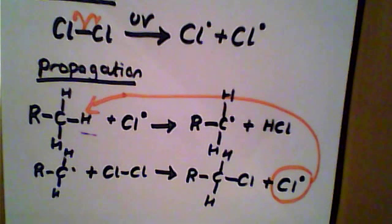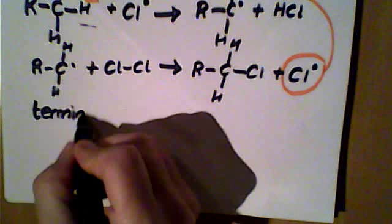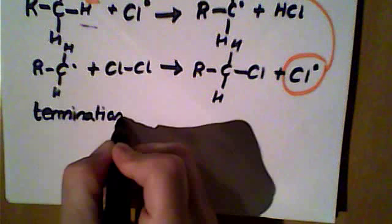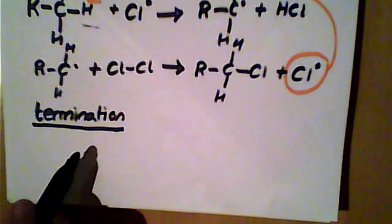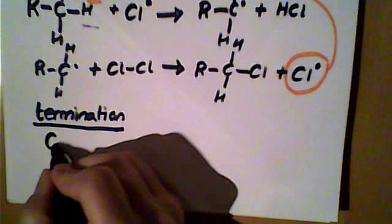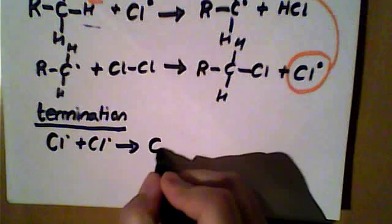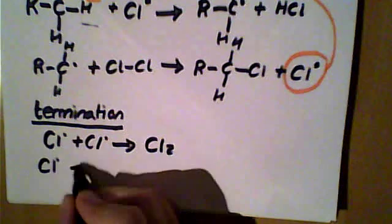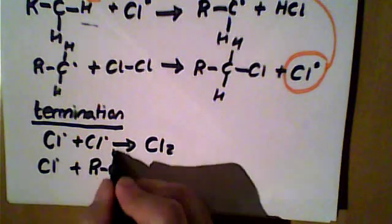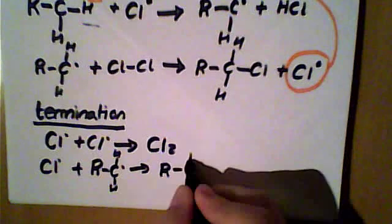Eventually when there's enough free radicals built up the reaction will be forced to stop because we now reach what's called the termination step. And in termination that's where the free radicals collide with each other at random. So let's look at three possible scenarios. We could have a chlorine radical colliding with a chlorine radical in which case we're just going to end up with a chlorine molecule. We could have a chlorine radical colliding with an alkyl radical in which case we're going to form a chloroalkane.